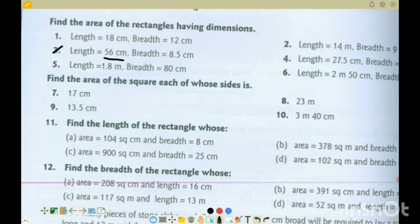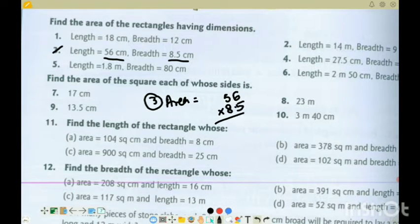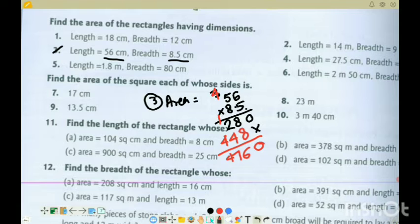Next, question 3. Length 56, breadth 8.5. So we have to multiply. This area, question 3, that is equal to 56 into 8.5. Multiply. So, 5 times 6 is 30, 5 times 5 is 25, and 3 is 28. And 8 times 6 is 48, 8 times 5 is 40, and 4 is 44. 0, 8, 8, 16, 1, 4, 5, 6, 7, and 4. 4, 7, 6, 0. This is 8.5, so here is the decimal point. Area is 476 centimeter square or square centimeter.